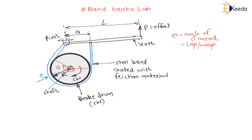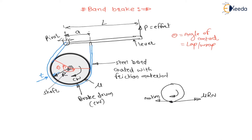Let us understand the direction of friction. The brake drum is rotating in the clockwise direction. Therefore, the contacting point at the lower surface is moving towards the left. Therefore, the friction force mu*Rn will be towards the right on the band. Rn is the normal reaction, and mu is the coefficient of friction between band and drum. There will be a normal reaction on the brake drum, and by action-reaction pairs, equal and opposite reactions act on the band.